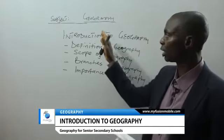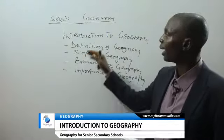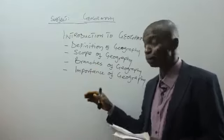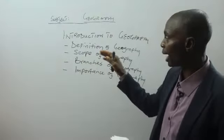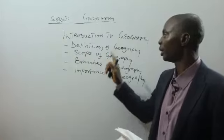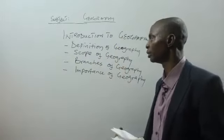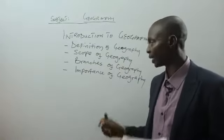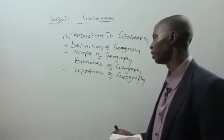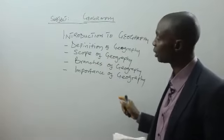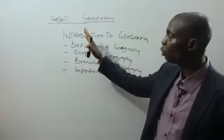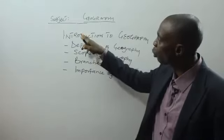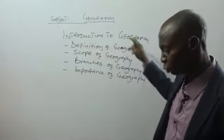As a student studying geography for the first time, at the end of this topic there is what we call self-assessment. You must assess yourself by asking: number one, what is the definition of geography? Number two, what is the scope of geography? Number three, what are the branches of geography? Number four, what is the importance of geography? By the time you can answer these convincingly, you will be assured that you have understood the first topic, which is introduction to geography.